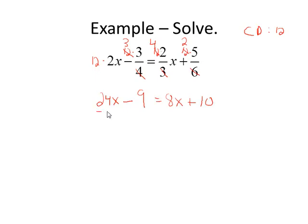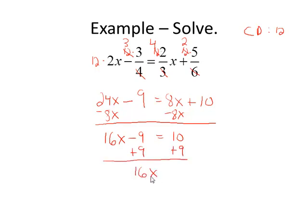Let's get all the variables together. Subtract 8x both sides. 16x minus 9 equals 10. Move the constants to the right. Add 9. 16x equals 19. And if we divide both sides by 16, we're left with x equals the irreducible improper fraction 19 over 16. So there's our solution set.